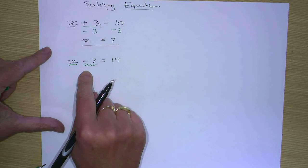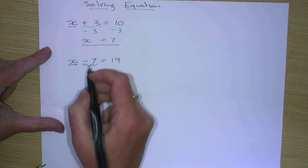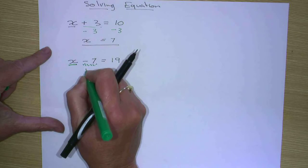So to get rid of the minus 7, we do the reverse operation. So in this case, we need to add 7.